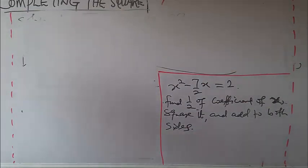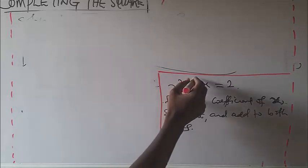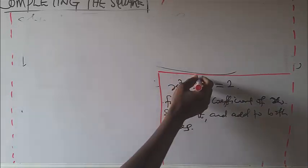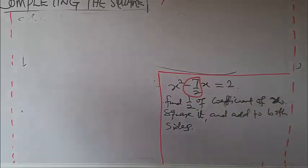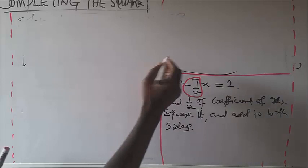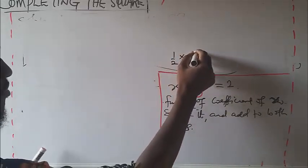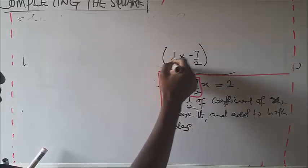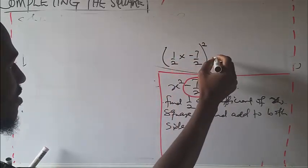From this equation, we have to find half of the coefficient of x. What is our coefficient of x? The number just before x — that's minus 7/2. So we look for half of minus 7/2, then we square it, and this is what we add to both sides of the equation.